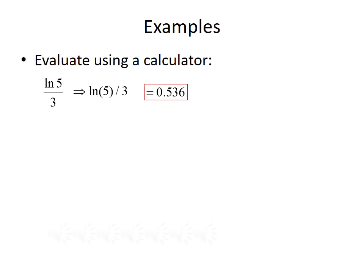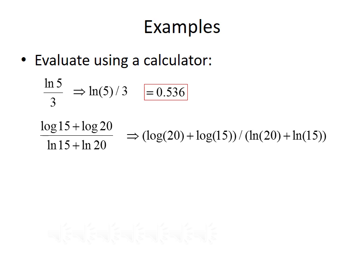Next, we want to evaluate log of 15 plus log of 20 divided by natural log 15 plus natural log of 20. We need to use parentheses in the proper places: open parenthesis, log of 20 plus log of 15, close parenthesis, divided by parenthesis, natural log of 20 plus natural log of 15, close parenthesis — ensuring the entire numerator and denominator are each in parentheses. If we evaluate that, we should get 0.434.